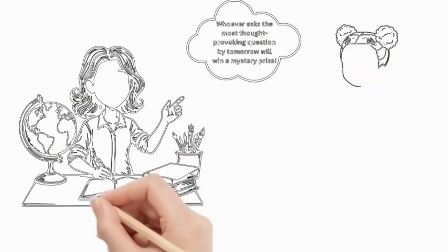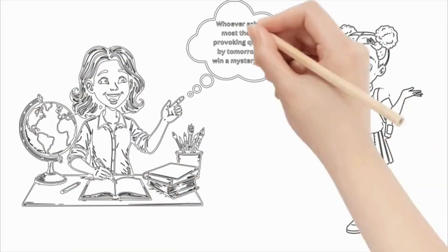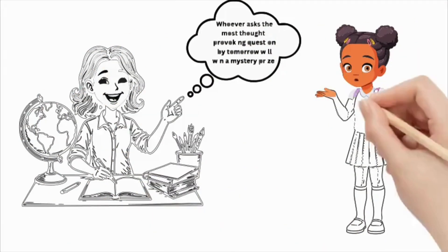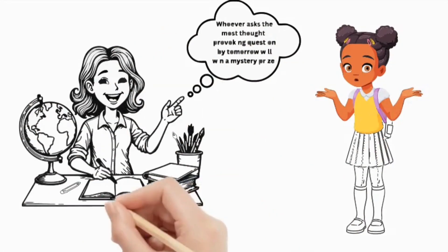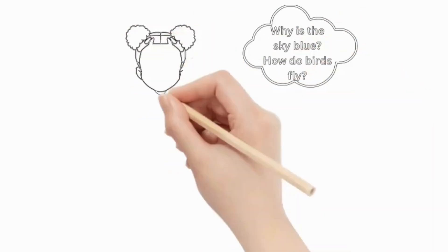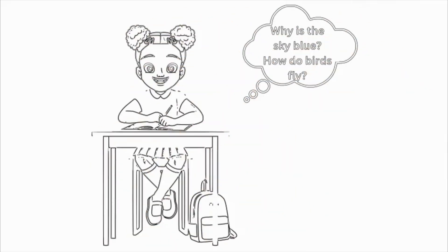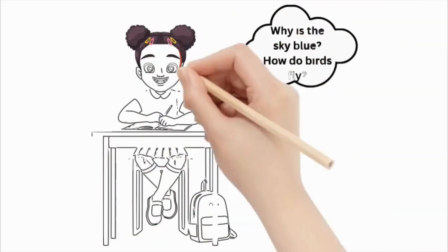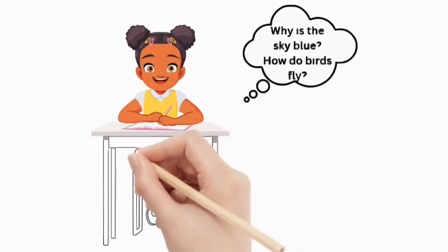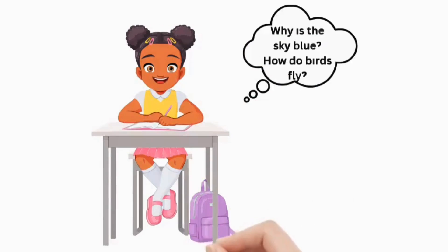Lila was the quietest girl in her class, but had the sharpest mind. While others chatted during breaks, she buried herself in her notebook, scribbling down ideas and questions about the world.